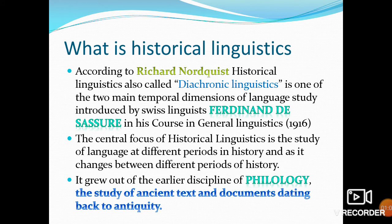So, what is Historical Linguistics? According to Richard Nordquist, Historical Linguistics, also called Diachronic Linguistics, is one of the main temporal dimensions of language study introduced by Swiss linguist Ferdinand de Saussure in his Course in General Linguistics, 1916. The central focus of Historical Linguistics is the study of language at different periods in history and as it changes between different periods of history. It grew out of the early discipline of philology, the study of ancient texts and documents dating back to antiquity.